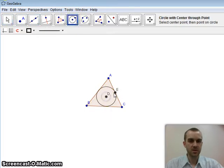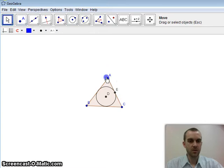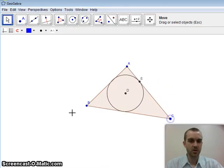And now I can do my circle from center to radius. And now no matter how I move my triangle I have an inscribed circle.